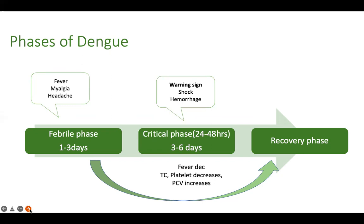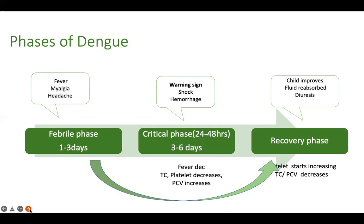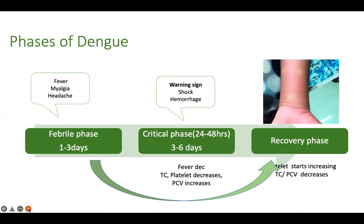The critical phase lasts 24 to 48 hours. If you tide over these 48 hours, the recovery or convalescent phase begins — platelet and total counts rise, appetite improves, fluids are reabsorbed, and diuresis occurs. Not every patient will go through all three phases; some may go directly from the febrile to the recovery phase. A classical skin sign during recovery is 'islands of white in a sea of red.'